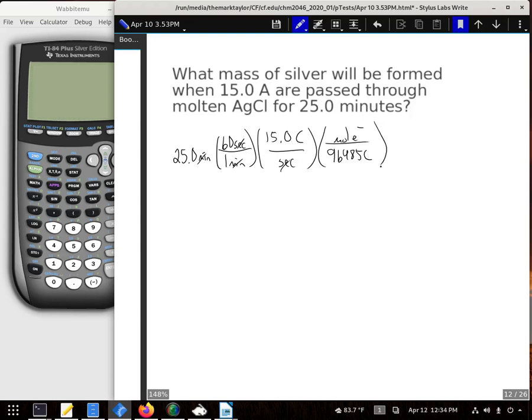Alright, that's turned our time into moles of electrons. In this case, for every mole of electrons you would get one silver because silver goes from Ag+ to just Ag. That's just one electron.